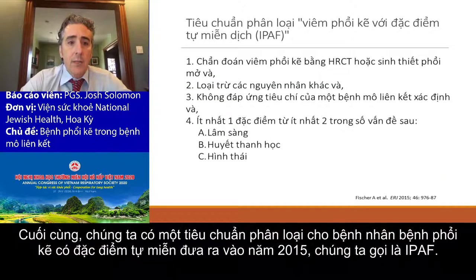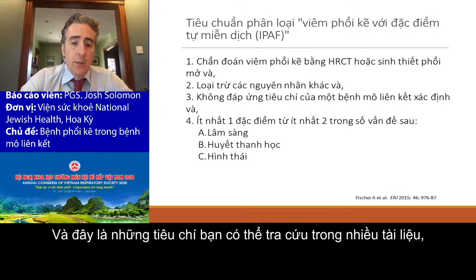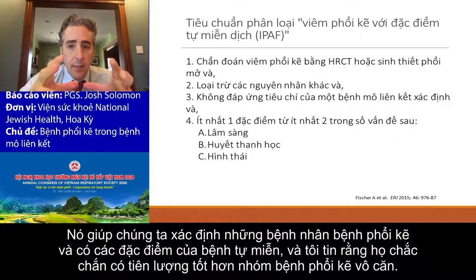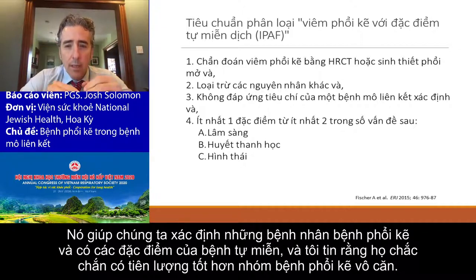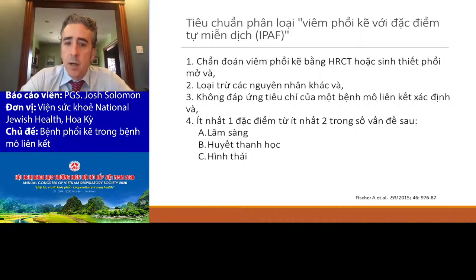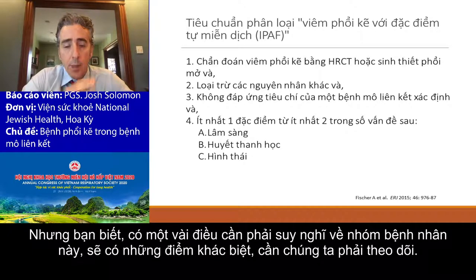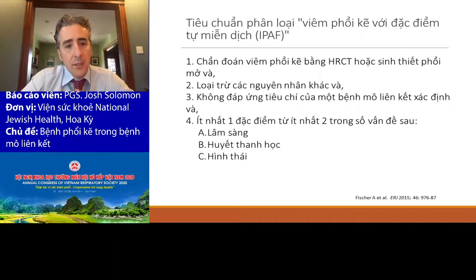We have a classification for these people called IPATH, which Dr. Arie Fisher came up with in 2015. These criteria help us establish that there are patients who have an ILD and some features of autoimmune disease. We think they probably have a better survival than patients with idiopathic disease. It is something to think about in all your subjects — it will help you follow them longitudinally and look for things outside of the lungs.